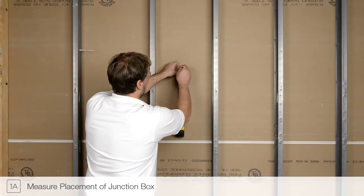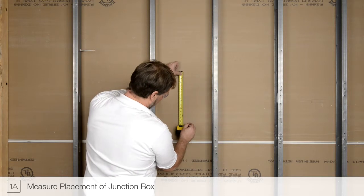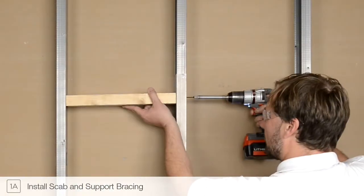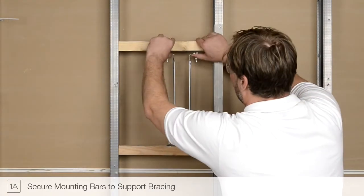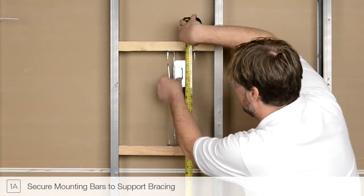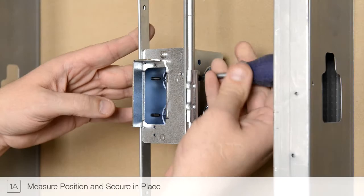Measure and mark the placement of the junction box. Install horizontal support bracing. Mount the junction box to the horizontal support bracing. Adjust the junction box to match the marked position and secure in place.